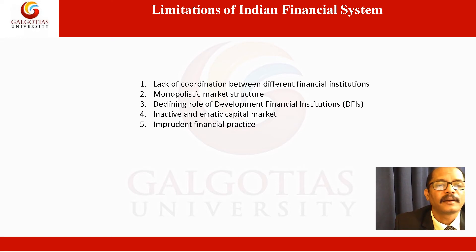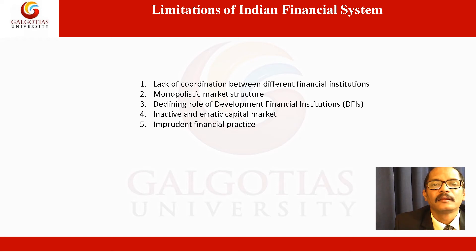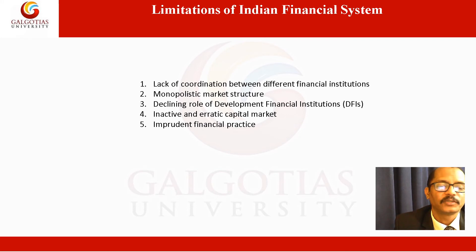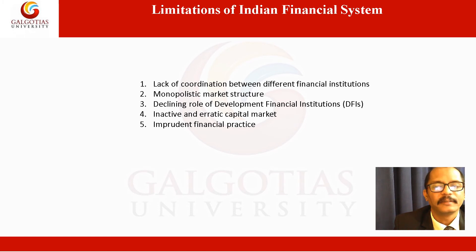The second limitation is the monopolistic market structure. In India, some financial institutions are so large that they have created a monopolistic market structure. For instance, the entire life insurance business in India was in the hands of LIC, and UTI more or less monopolized the mutual fund industry. With liberalization starting in 1990, these things have been largely addressed. But still, we have a number of very large institutions — for example, just about 14 insurance companies in India, with LIC still being a very large company. This monopolistic market structure is being addressed by the government, but the impact is still felt by the industry.